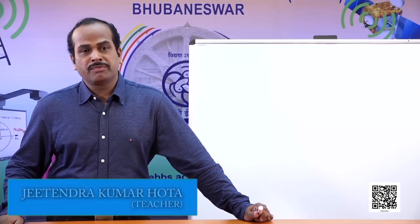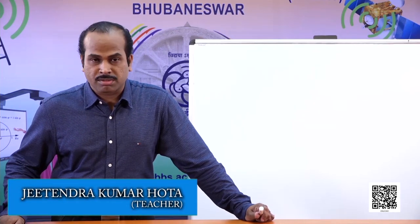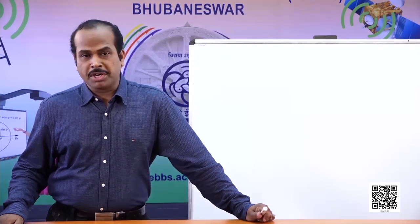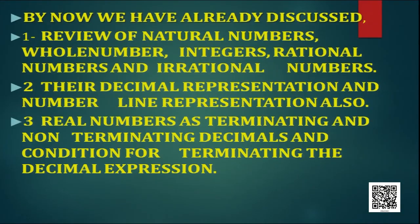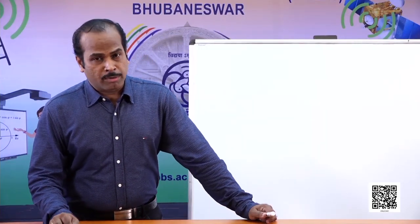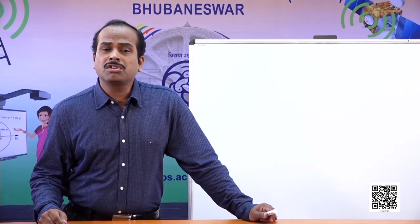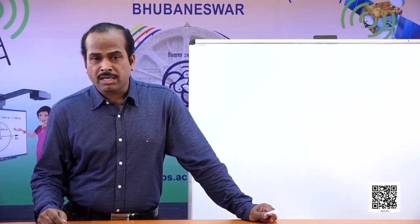Hello students, welcome to the fifth session of this chapter on number systems. In the previous four sessions, we already discussed natural numbers, whole numbers, integers, rational numbers, and irrational numbers — their decimal representation, representation on the number line, real numbers as terminating and non-terminating decimals, conditions for terminating decimal expressions, operations on rational and irrational numbers, and rationalization of expressions whose denominators are in irrational form.